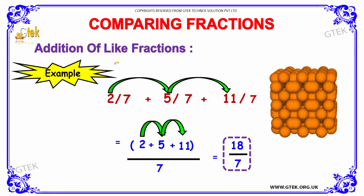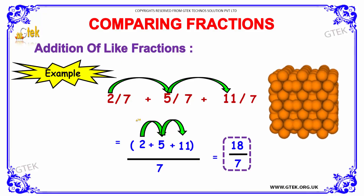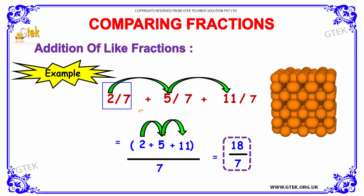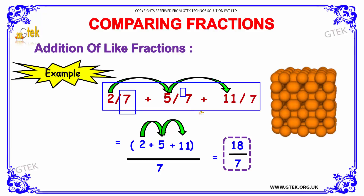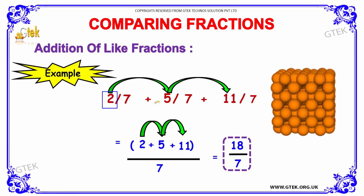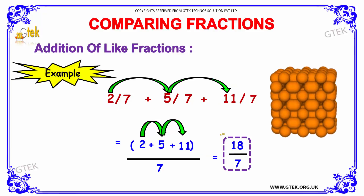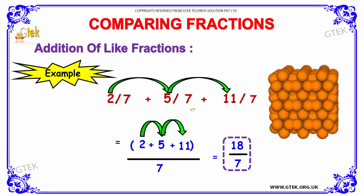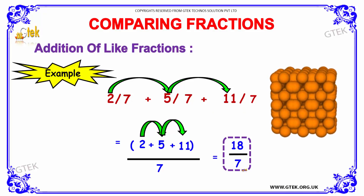The next example: 2 divided by 7 plus 5 divided by 7 plus 11 divided by 7. Since we have the common denominator 7 in all terms, it is a like fraction. We simply add the numerators: 2 plus 5 plus 11 equals 18. Since the common denominator is 7, the answer is 18 divided by 7.